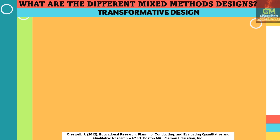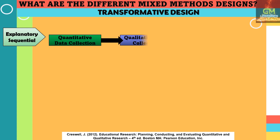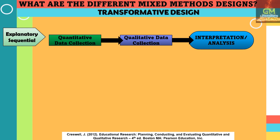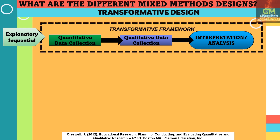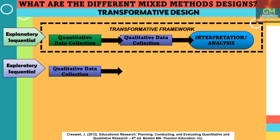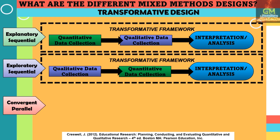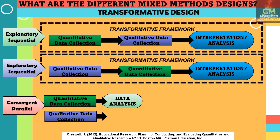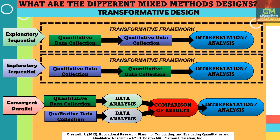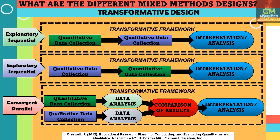To further clarify, let's look at the following examples. For explanatory sequential, we start with the collection of quantitative data followed by qualitative data, which is then interpreted and analyzed — all within a particular transformative framework. For exploratory sequential, we start with qualitative data collection followed by quantitative data collection, analysis, and interpretation, again within a transformative framework. The convergent parallel design starts with simultaneous quantitative and qualitative data collection and analysis, after which the results are compared and interpreted, also within a specific transformative framework.